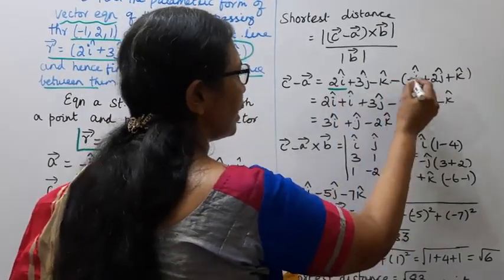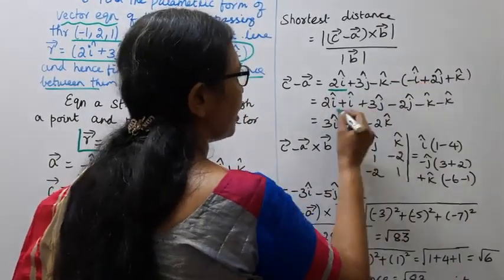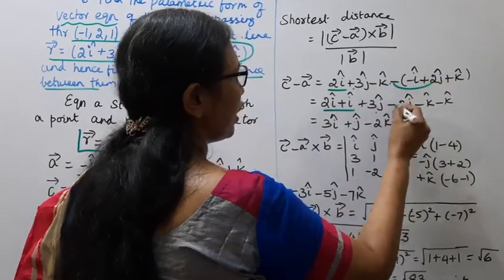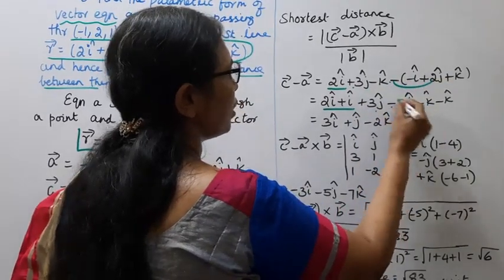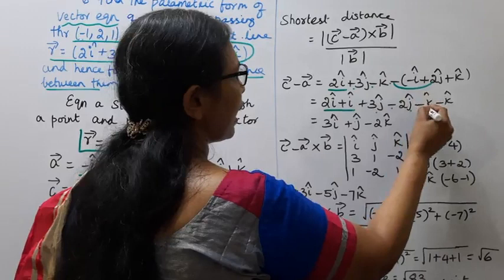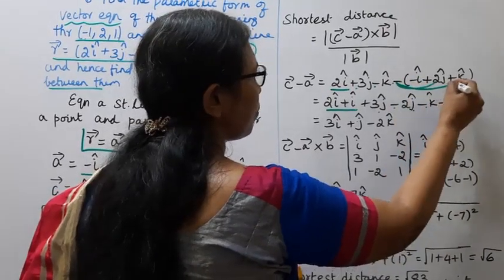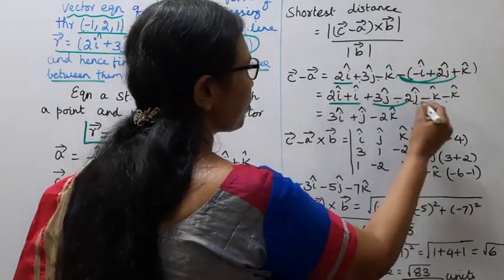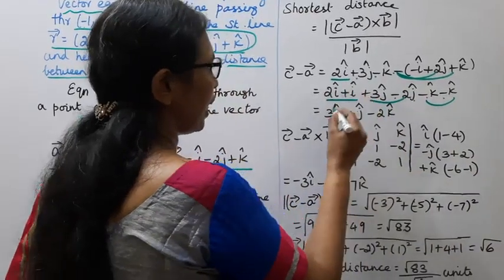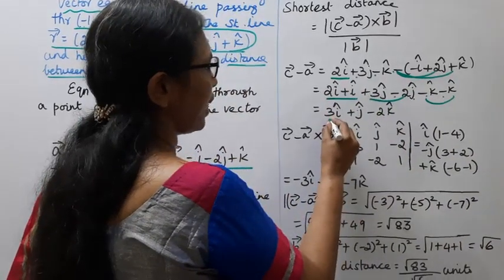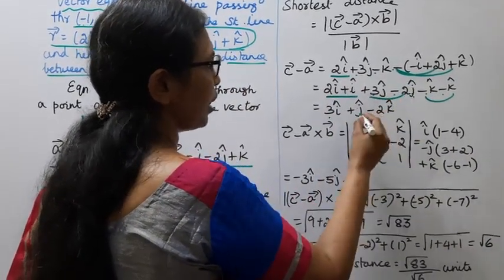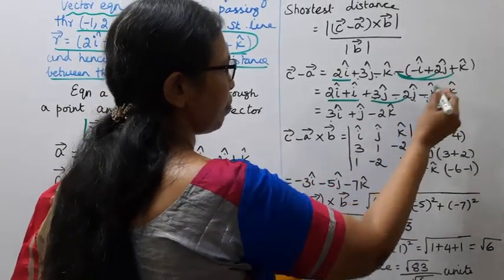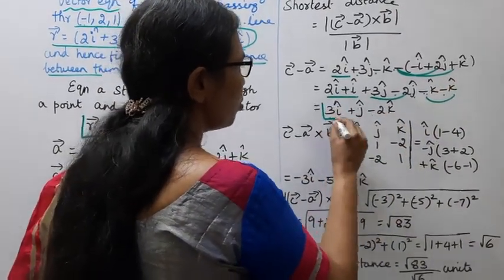Expanding: 2i-cap plus i-cap gives 3i-cap; 3j-cap minus 2j-cap gives j-cap; minus k-cap minus k-cap gives minus 2k-cap. So c vector minus a vector equals 3i-cap plus j-cap minus 2k-cap.